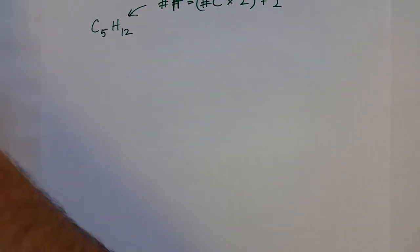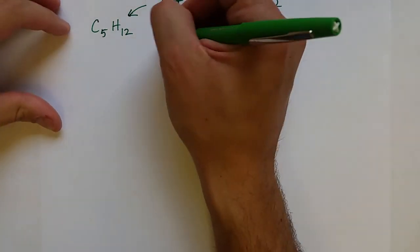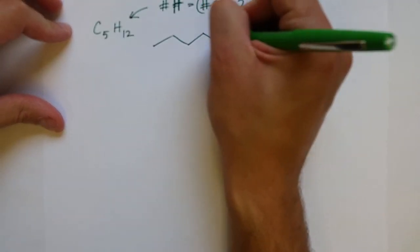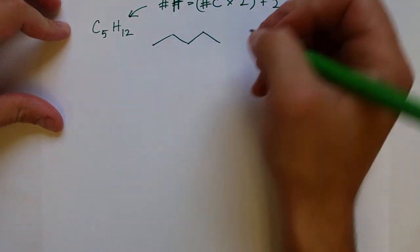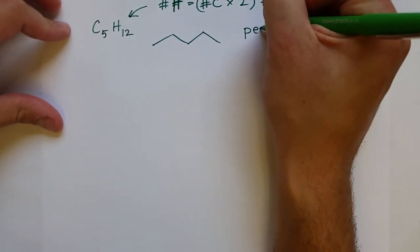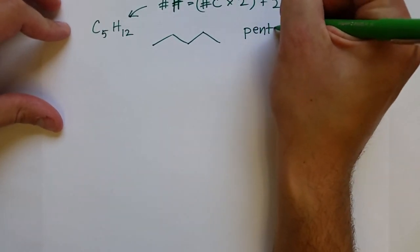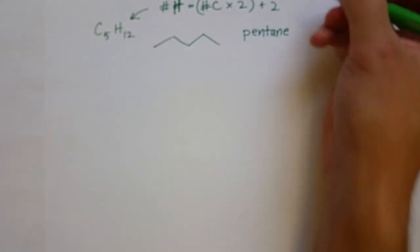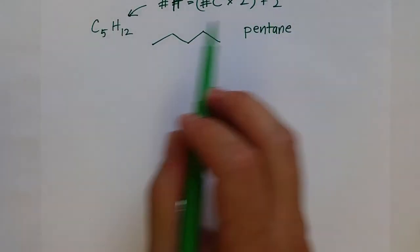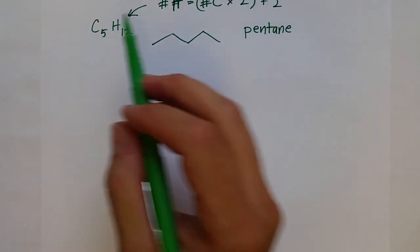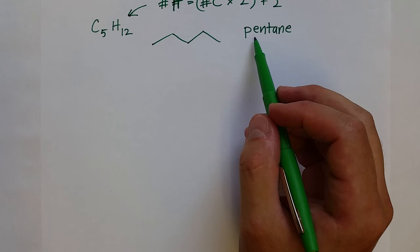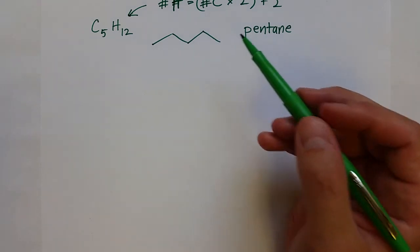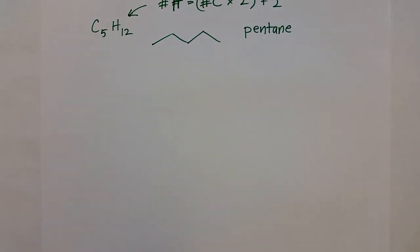So that is five carbons. We can draw the skeletal formula — one, two, three, four, five — and that is pentane. Now we're going to start to use a prefix that tells you how many carbons there are. I think of pentagon in geometry — penta is five — so pentane is five carbons.